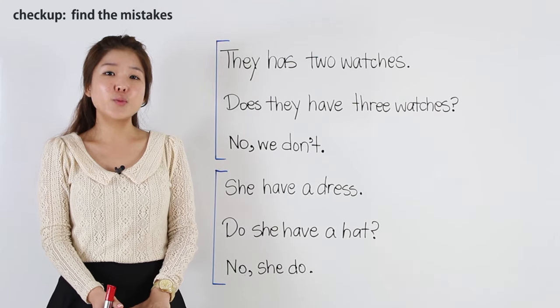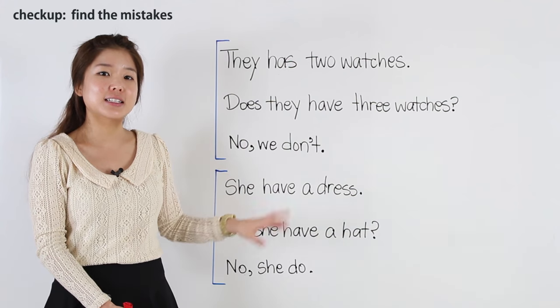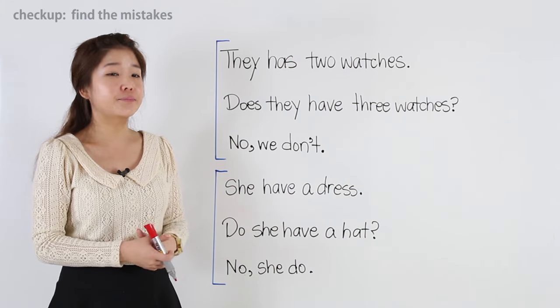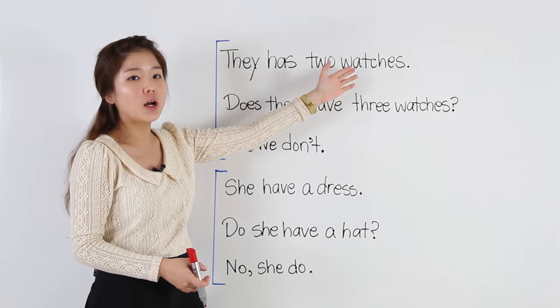Okay, now for this practice, we have to find the mistakes in these sentences. What's wrong with them? So let's look at the first one. They has two watches.